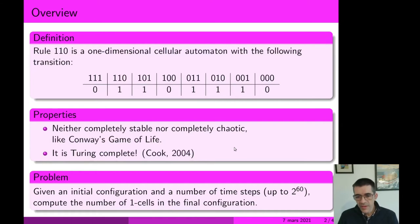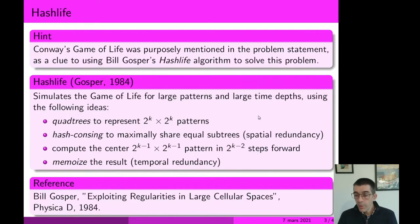The problem was stated as follows: you are given an initial configuration and a total number of time steps, which can be really huge up to 2^60, and you have to compute the total number of ones in the final configuration. We purposely mentioned Game of Life in the problem statement as a clue to using HashLife algorithms to solve this problem.